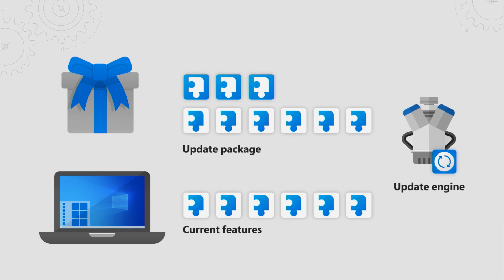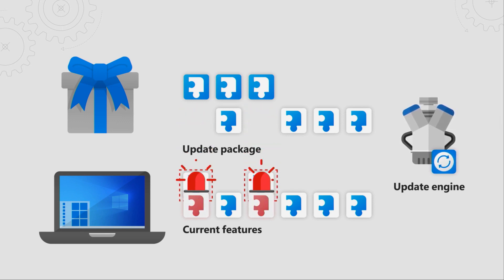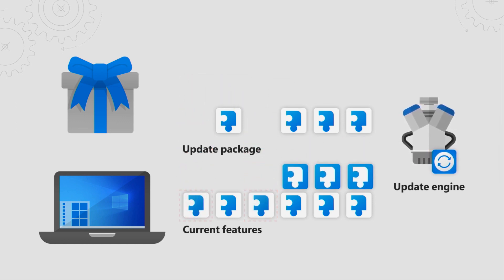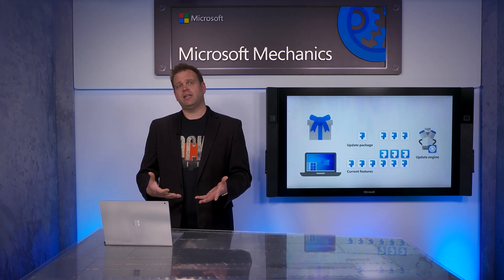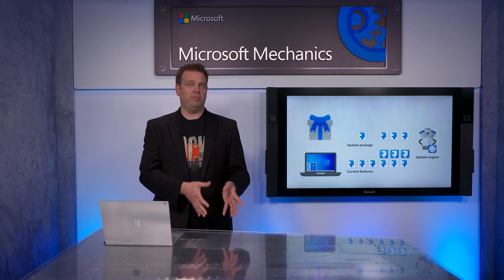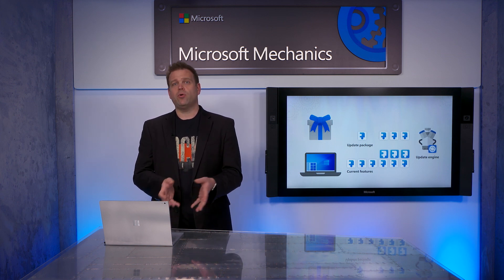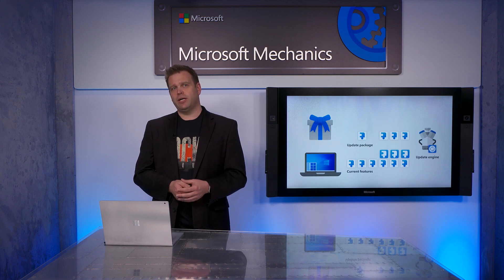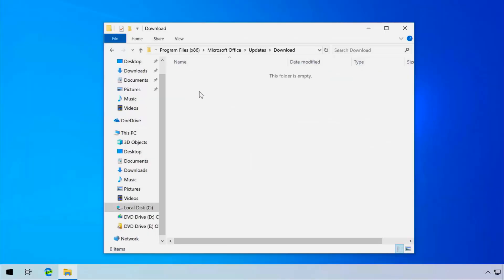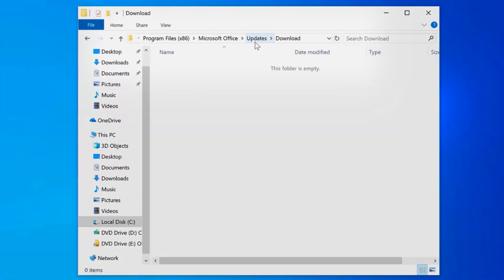The update engine looks at a list of components offered in the package and sees what's already there and still usable. It then determines the components that are out-of-date on the local machine and brings the out-of-date replacements plus all net-new components from the update package. Like the initial install, you can point the Office update engine to files stored on-premises, on a local hard drive, or the internet — internet connectivity is not always required. Once the update engine compares what's installed with what's needed, it downloads those update files and saves them temporarily into Program Files, Microsoft Office, Updates Download.